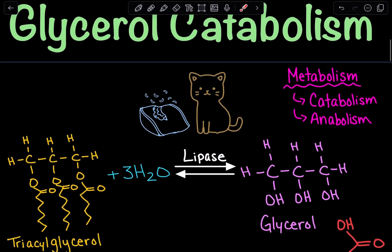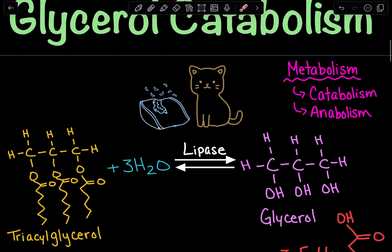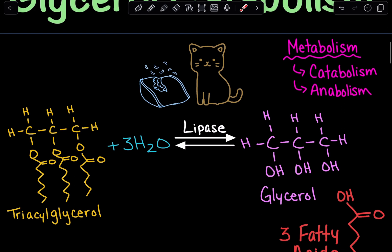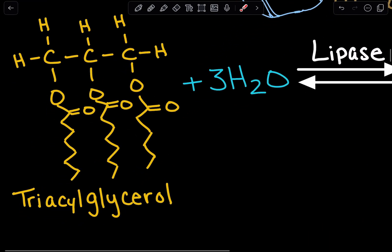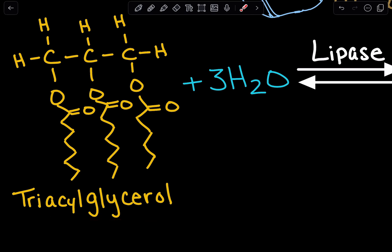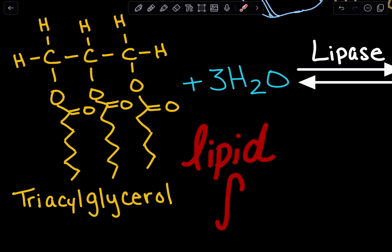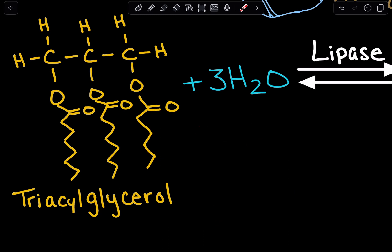So here we're going to go over glycerol catabolism — but where is this glycerol coming from? Here we have a triacylglycerol, which is just one example of what a lipid could look like. Remember that a lipid is simply what we also refer to as a fat, and fats and lipids are made up of glycerol and fatty acids.